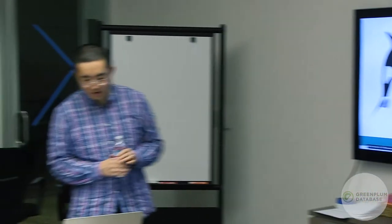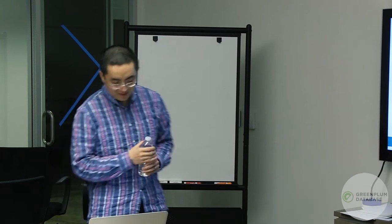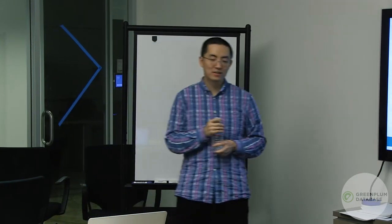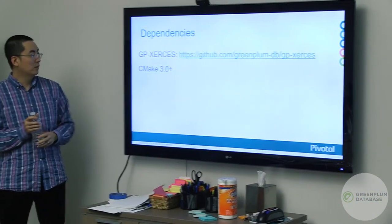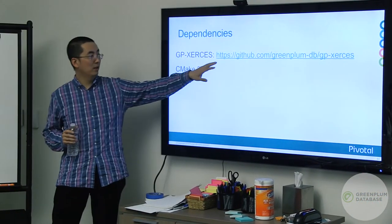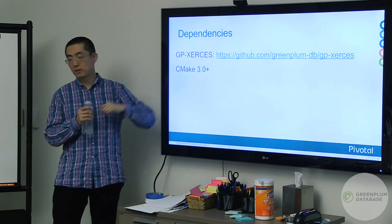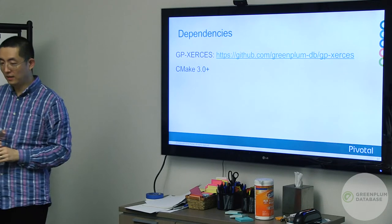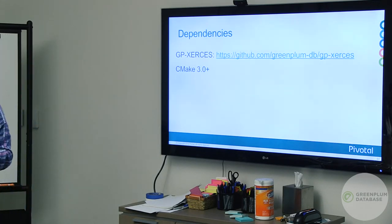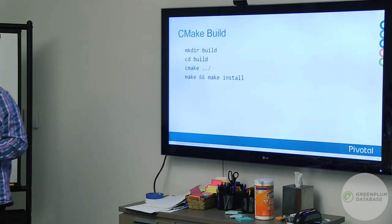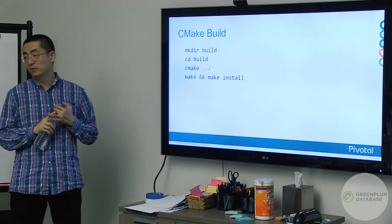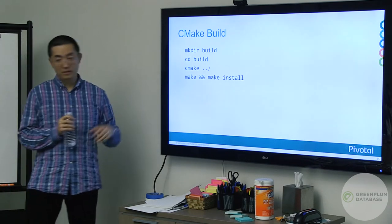Once you have the clone and understand the structure, the first thing is to build it. Building is actually very simple: you need CMake 3.0+, and a dependency called gpxersus for XML handling — available from GitHub. Once you build and install gpxersus and CMake, you go to the repo, make a build directory, run cmake, and make.